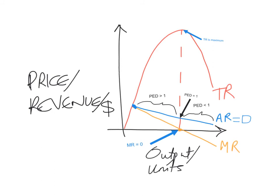A fall in price will actually cause an increase in total revenue when demand is elastic. When demand is price inelastic, any increase in sales and lowering of price will actually cause total revenue to fall. When demand is unit elastic — at the very center of the demand curve — total revenue is maximized. Since marginal revenue is the slope of the total revenue curve, when demand is elastic, marginal revenue is positive — the more you sell, the more revenue increases. When demand is inelastic, marginal revenue is negative. This explains why the total revenue curve and the average and marginal revenue curves are shaped as they are.